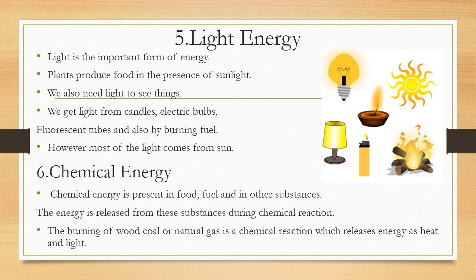Light is an important form of energy. Plants produce food in the presence of sunlight and cannot produce food without it. We also need light to see things. We get light from candles, electrical bulbs, fluorescent tubes, and by burning fuel. However, most of the light comes from the sun.